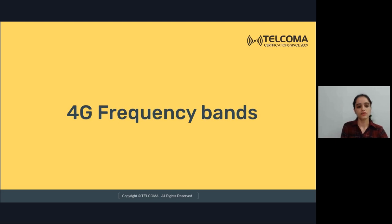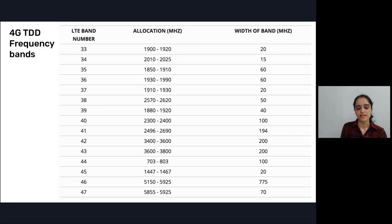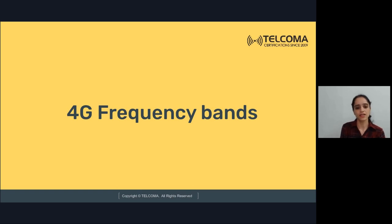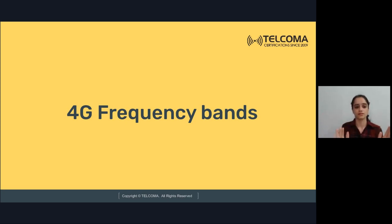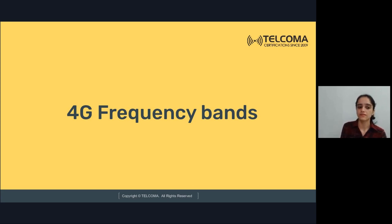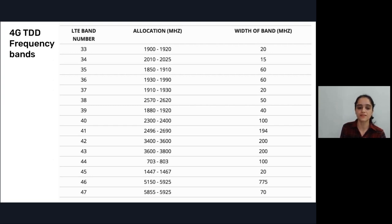Let's discuss 4G LTE frequency bands. All frequency bands are divided into two categories: FDD, frequency division duplex, and TDD, time division duplex. So all the frequency bands are divided into FDD bands and TDD bands.